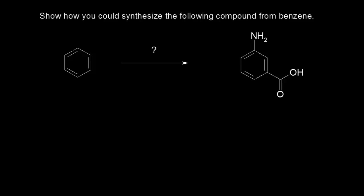Our goal is to synthesize simple organic molecules starting from benzene. This time, our goal is to make a specific molecule. We're going to use the concept of retrosynthesis, working backwards and thinking about what could be an immediate precursor to this molecule. To do that, let's analyze the groups that are attached to our ring.